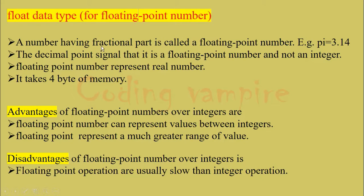Floating data type: A number having a fractional part is called a floating point number. Example: pi = 3.14. The decimal point signals that it is a floating point number and not an integer. Floating point numbers represent real numbers. It takes 4 bytes of memory. So integer takes 2 bytes of memory and floating point takes 4 bytes of memory.